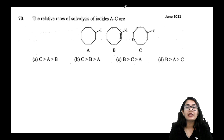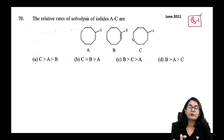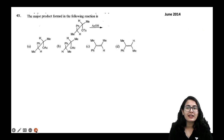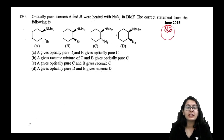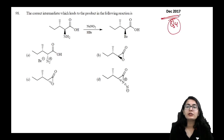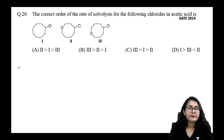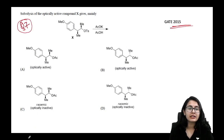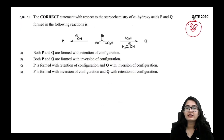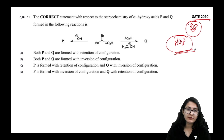These are the four important examples of NGP. Now here are previous year exam questions for practice: question 1 and 2 from June 2014, question 3 from June 2015, question 4 from December 2017, question 5 from June 2018, question 6 from GATE 2014, question 7 from GATE 2015, and question 8 from GATE 2020 — all based on neighboring group participation.